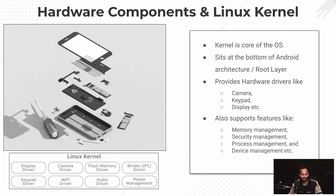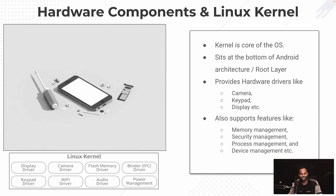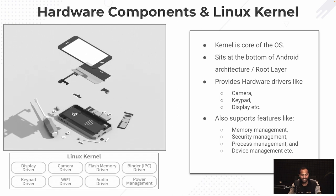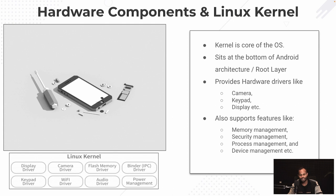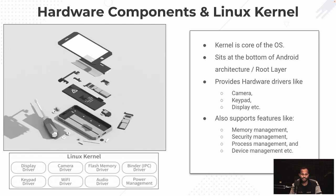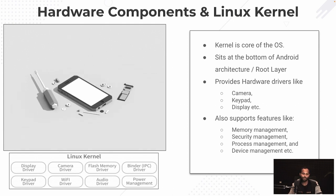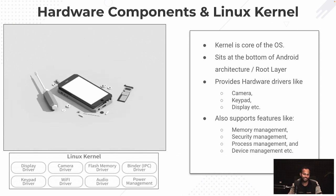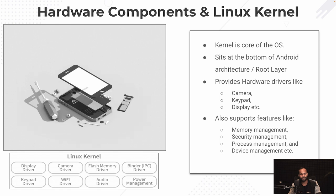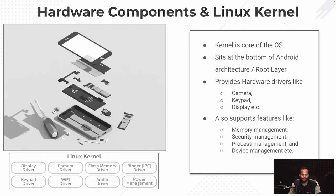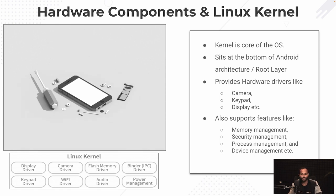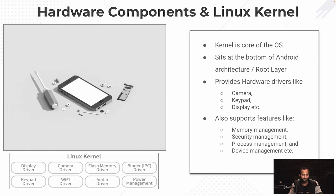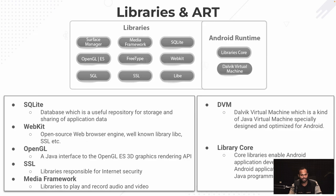Linux provides an interface for the library layer above to interact with and make use of the hardware components. I'll explain properly in the last slide where I've given an example - you guys will understand that very well. That's the base layer, also called the core layer. Apart from providing the interface, Linux is very good at memory and security management, process management, device management, and many more.